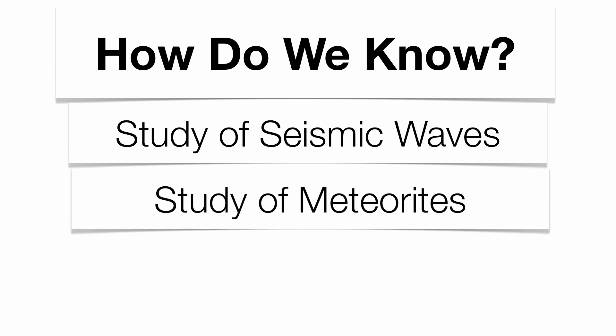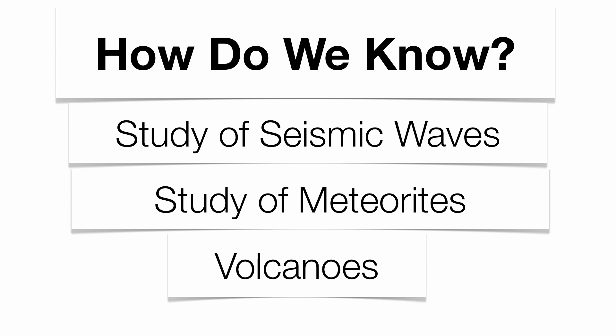Study of meteorites — in terms of what meteorites are made up of compared to what the inside of our Earth is made up of. We'll talk about that relationship as well. And volcanoes, because volcanoes are the vents on the planet; they spew out rock, they spew out lava, they spew out lots of gases. Seismologists can take the material that comes out of volcanoes and piece together a picture of what the inside of the Earth might look like and what it's made up of.